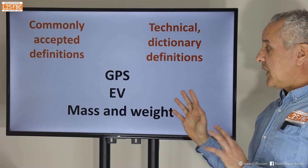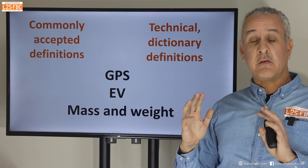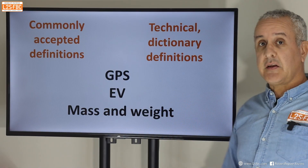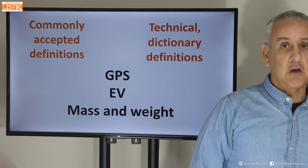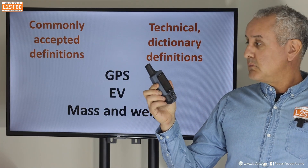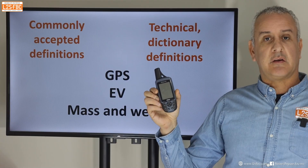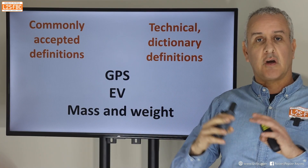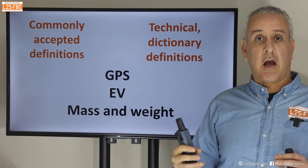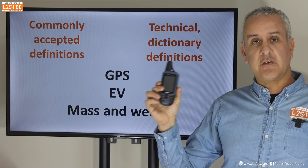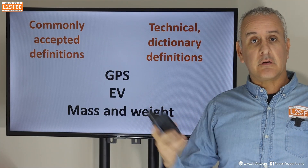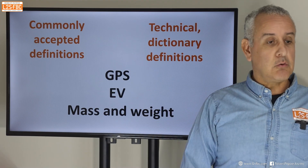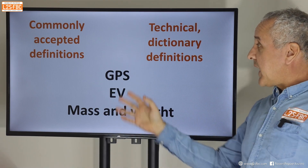Before we start, we've got to understand that with many things in the world there is a commonly accepted definition and there's a technical definition. For example, what would you say this is? Most people would say it's a GPS — well that is not correct. GPS is the whole system of satellites and ground stations; this is just a receiver. But if I said to you 'I want to buy a GPS,' you'd know what I was talking about.